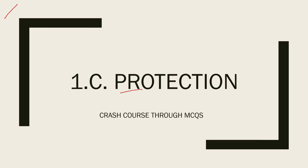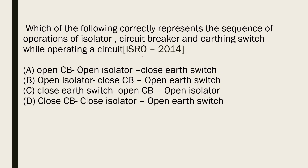This video covers questions on power system protection topics as asked in ISRO previous papers. We will look exclusively at ISRO papers. The first question is from ISRO 2014: which of the following represents the sequence of operation of an isolator, circuit breaker, and earth switch while operating a circuit? To understand this, we need to know that switchgear is a combination of a relay which senses the fault and gives a signal to a circuit breaker, which then isolates the faulty part from the healthy part.